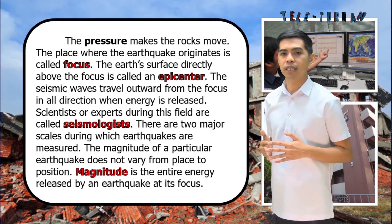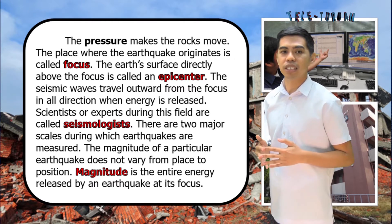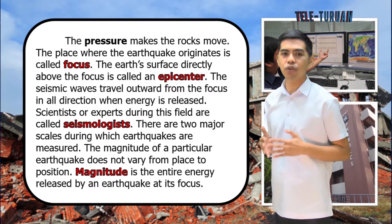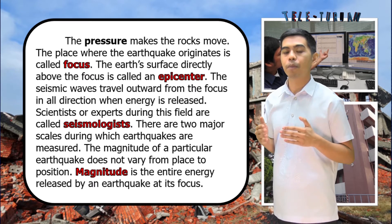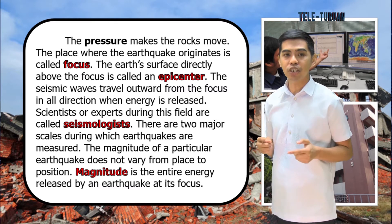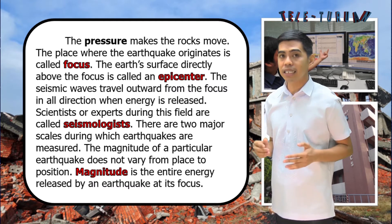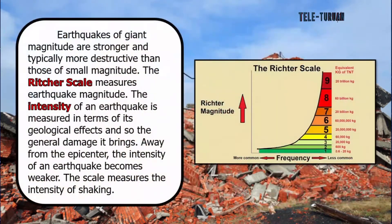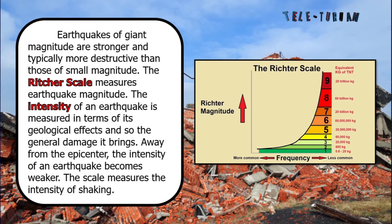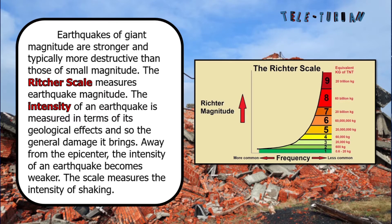Scientists or experts in this field are called seismologists. There are two major scales by which earthquakes are measured. The magnitude of a particular earthquake does not vary from place to place. Magnitude is the total energy released by an earthquake at its focus. Earthquakes of giant magnitude are stronger and typically more destructive than those of small magnitude. The Richter scale measures earthquake magnitude.